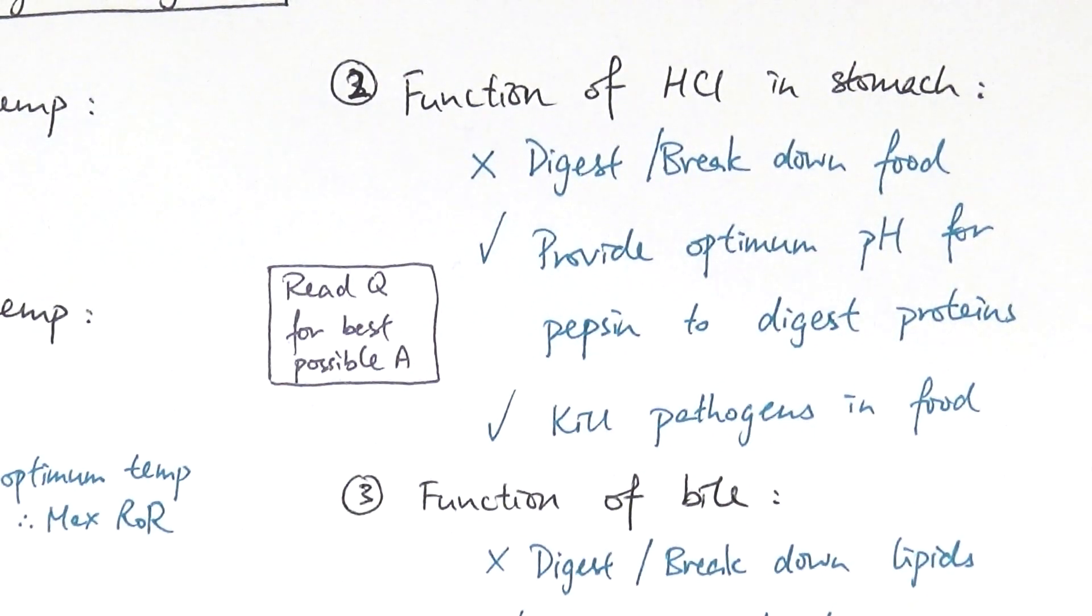Another common mistake is about mixing up the function of hydrochloric acid in the stomach. Very tempting for students to say that they digest and break down food because that's the function of the stomach and the most abundant thing that you can find in stomach is usually hydrochloric acid. But that's not the case.